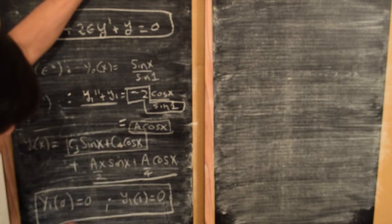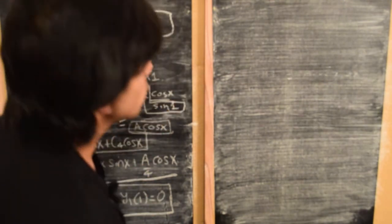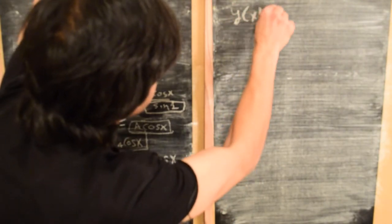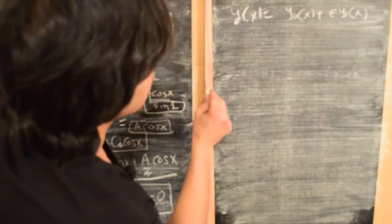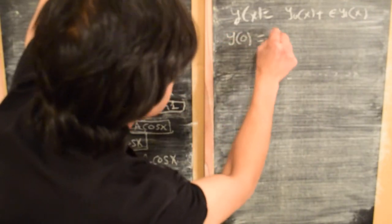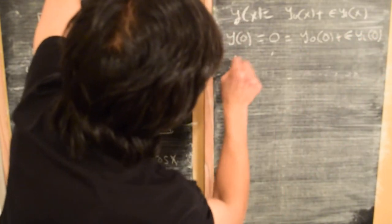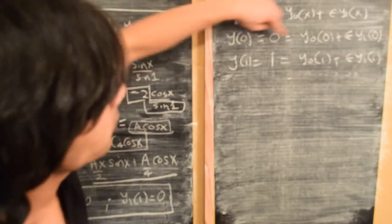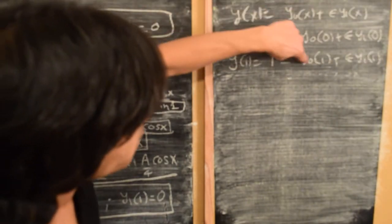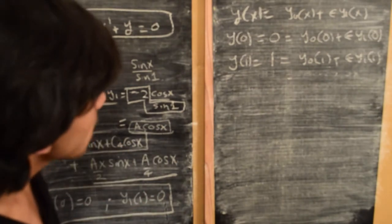Now we need to solve for the constants c_3 and c_4 subject to the boundary conditions y_1(0) = 0 and y_1(1) = 0. These boundary conditions are obtained by writing y(x) in the form of its expansion y_0(x) + ε·y_1(x), and comparing like powers of epsilon. This gives y_0(0) = 0, y_0(1) = 1, y_1(0) = 0, and y_1(1) = 0, since there is no term corresponding to epsilon on the left-hand side.